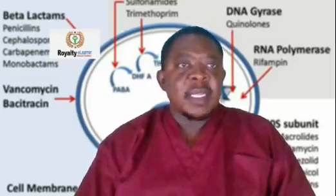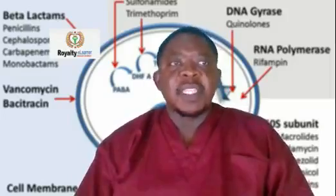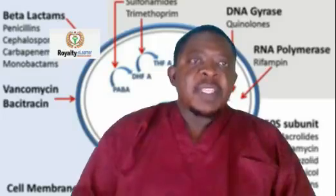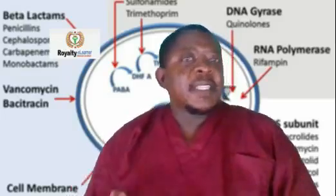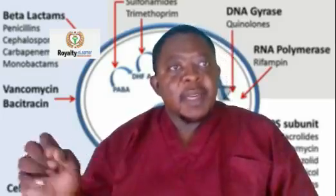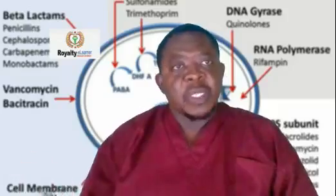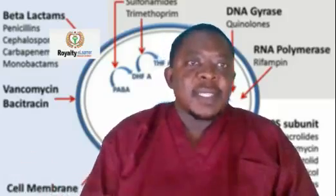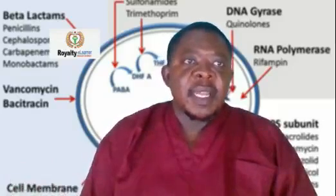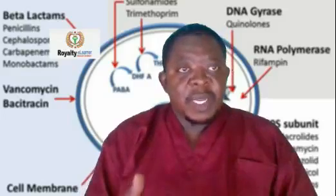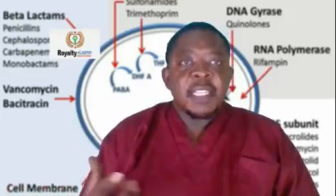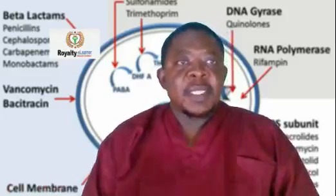The last antibiotic that we can talk about is fluoroquinolones. Fluoroquinolones inhibit the activity of DNA gyrase, which is a type of topoisomerase found in prokaryotes. Prokaryotes are single-celled organisms that lack a nucleus and other membrane-bound organelles.